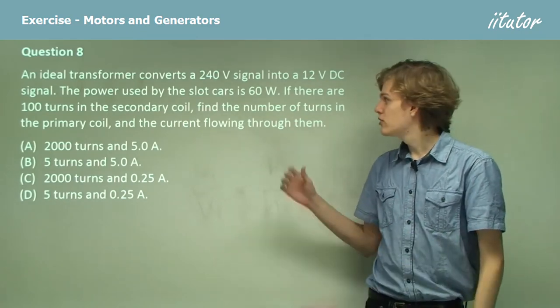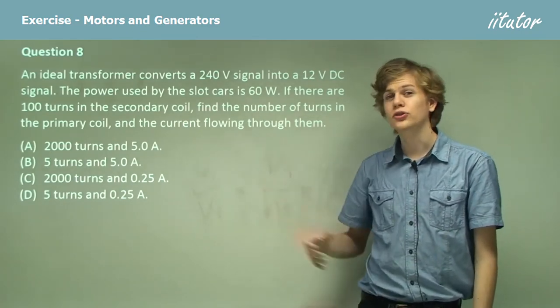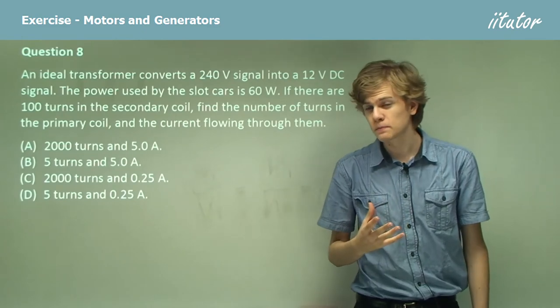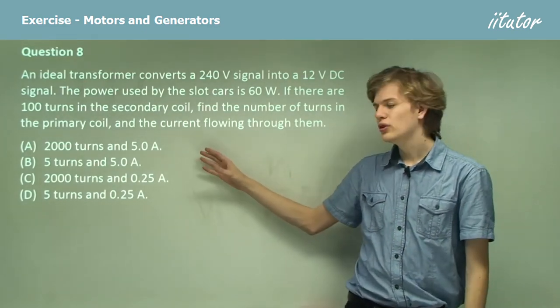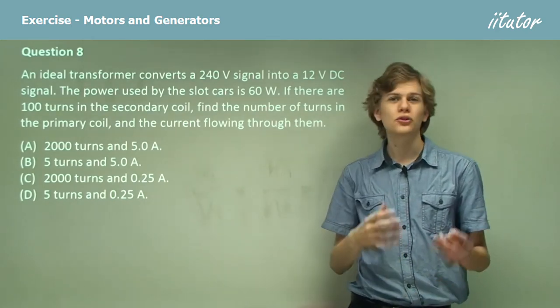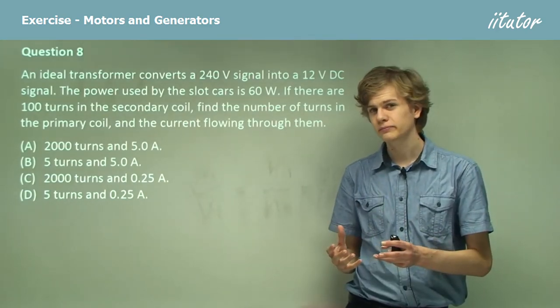We also know that if the amount of power in each set of coils is constant, 60 watts, then we should be able to use that to figure out how the current will change because power is voltage times current.